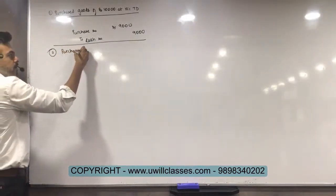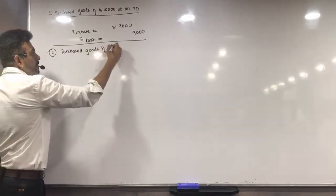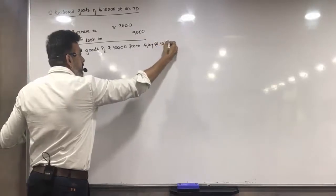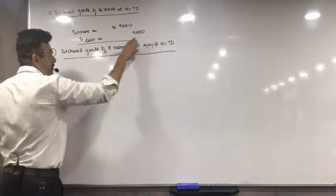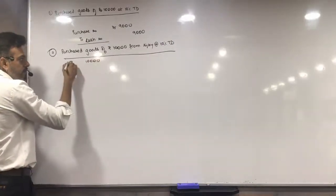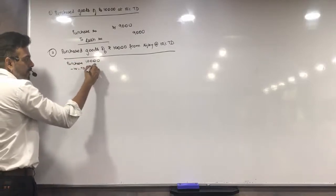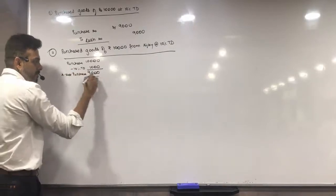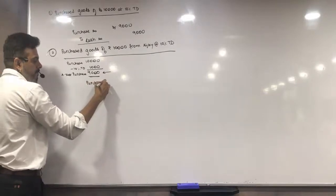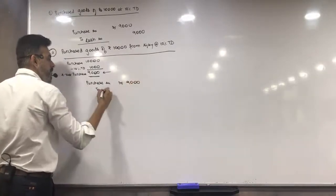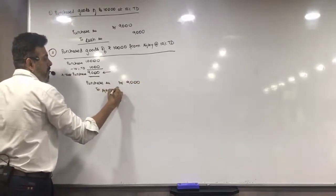Transaction 2: Purchase goods of rupees 10,000 from Ajay at 10% trade discount. Again, 10,000 worth of goods — minus 10% trade discount of 1,000 gives a net purchase of 9,000. Your entry will always be with this net amount. So the entry will be: purchase account debit 9,000, to Ajay account 9,000.